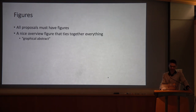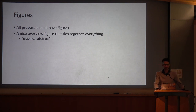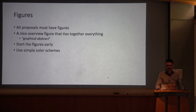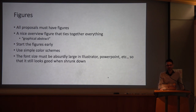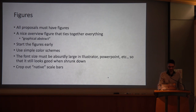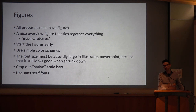All proposals have to have figures. A nice graphical overview that ties everything together — like a graphical abstract on the first page — gives the whole idea of the proposal at once and is awesome. Start on figures early. Use simple, consistent color schemes like the Google colors. The font size must be absurdly large in Illustrator or PowerPoint so it still looks good when shrunk down to three inches. Crop out native scale bars from microscope images. Use a sans-serif font — if you write it all in Times New Roman, it looks like it was written in 1890.